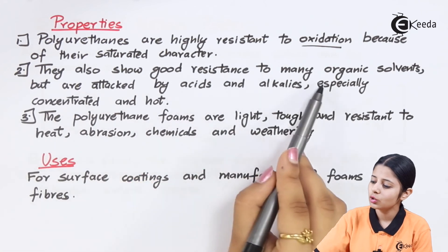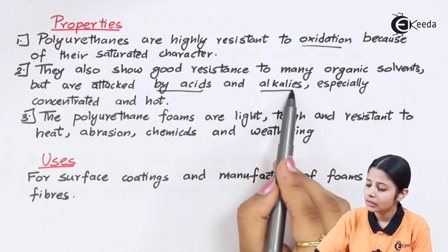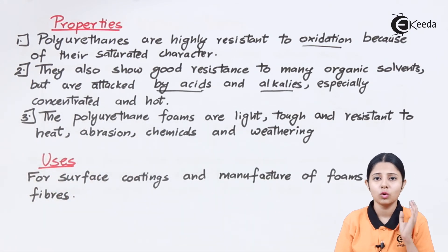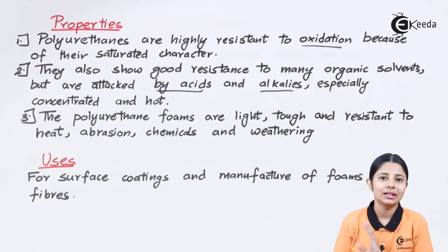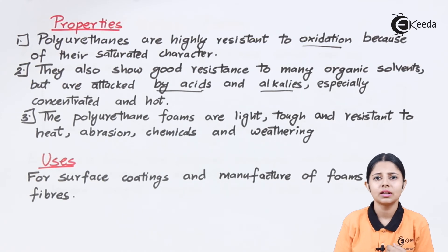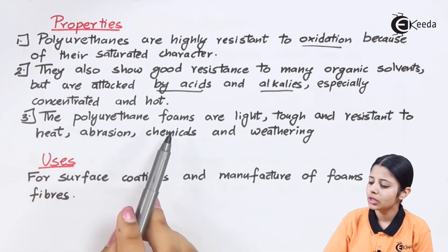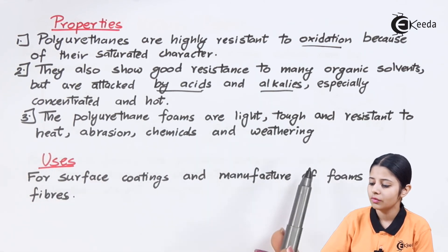The second property is that polyurethanes show good resistance to many organic solvents such as aldehydes, ketones, esters, and ethers, but are attacked by acids and alkalies — especially when concentrated and hot. Under those extreme conditions the rubber gets decomposed. The third property is that polyurethane foams are light, tough, and resistant to heat, abrasion, chemicals, and weathering.